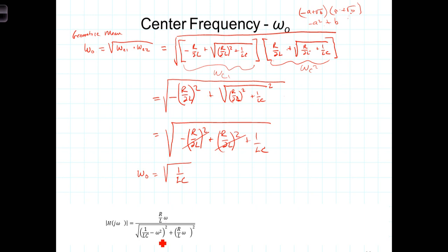which when you square it undoes this radical, and you get 1 over LC minus 1 over LC, this term goes to zero.